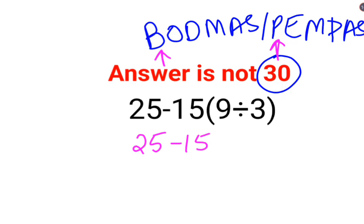25 minus 15. Now there is no sign between 15 and the bracket means it is multiplication. 9 divided by 3 is 3.